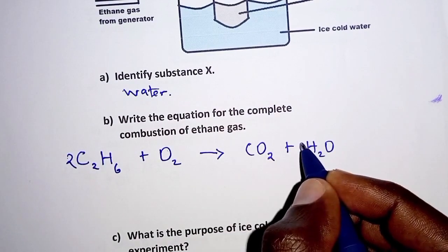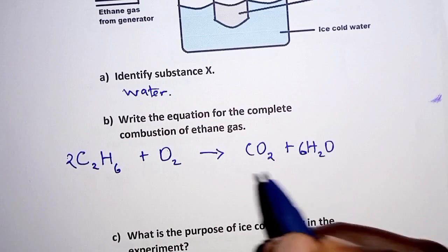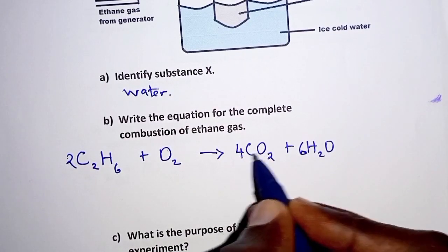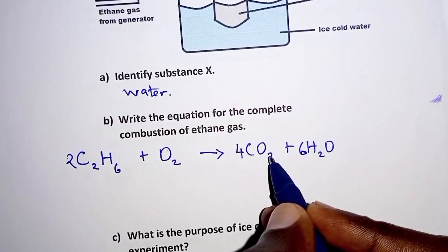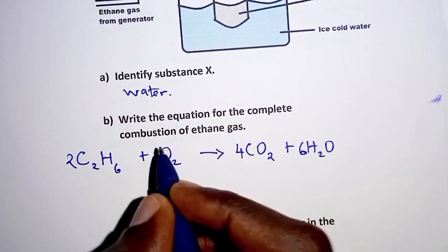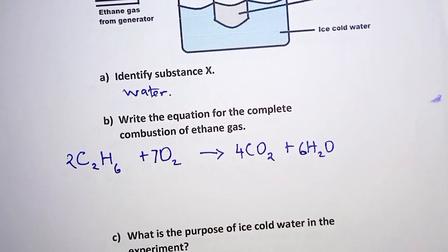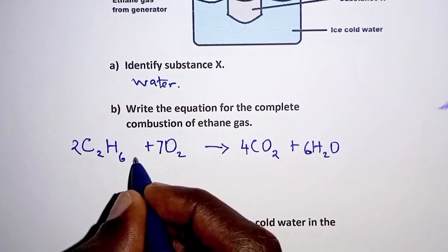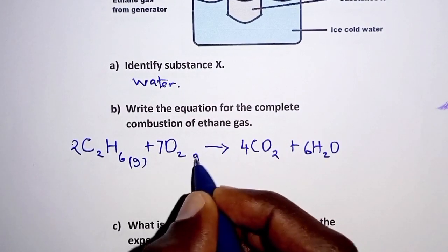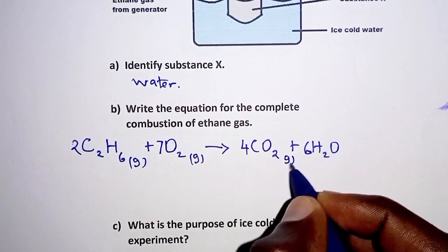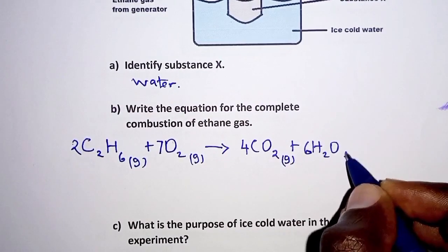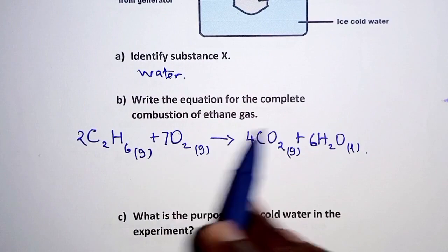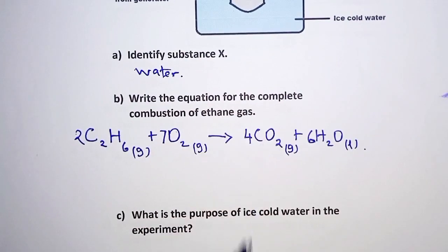To balance this equation: C₂H₆ gives us 2 carbons, so we place a 2 in front of CO₂. We have 6 hydrogens, giving 3 H₂O. For oxygen: 2 + 3 = 5 on the right... adjusting, we get 7/2 O₂, or multiply through to get: 2C₂H₆ + 7O₂ → 4CO₂ + 6H₂O. All reactants are gases and water is liquid. That is the balanced equation for the complete combustion of ethane gas.